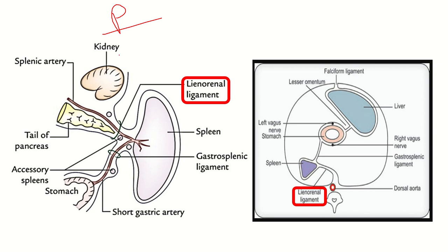In the second picture we can see the vertebra, which represents the most posterior part. Here we can see the stomach and spleen, and the structure attached to the spleen anteriorly is the gastrosplenic ligament, which attaches the spleen to the stomach.